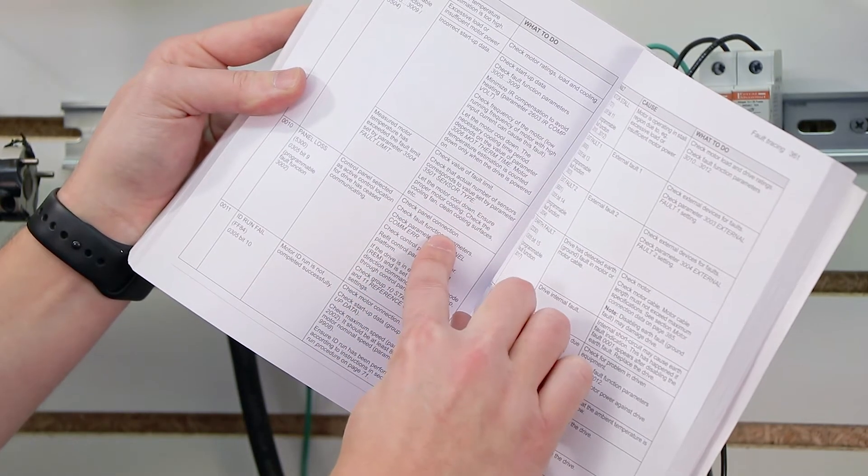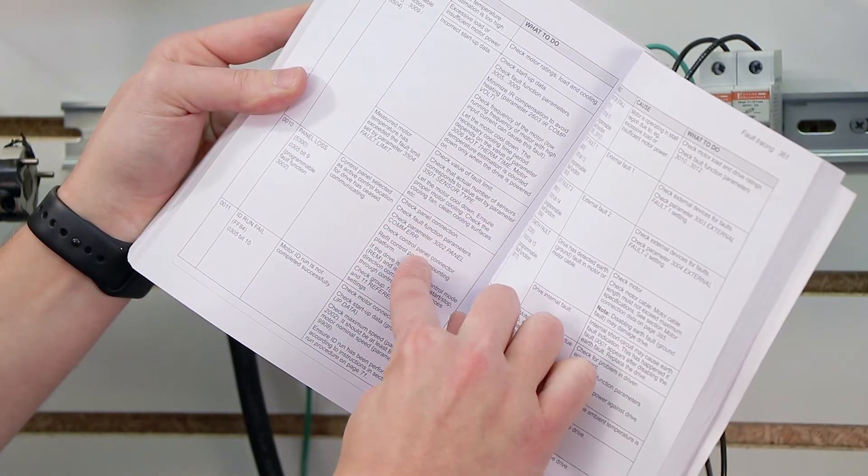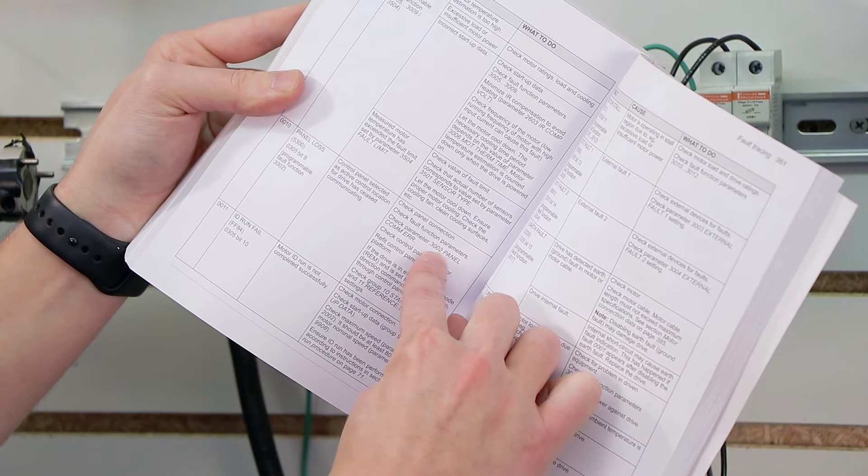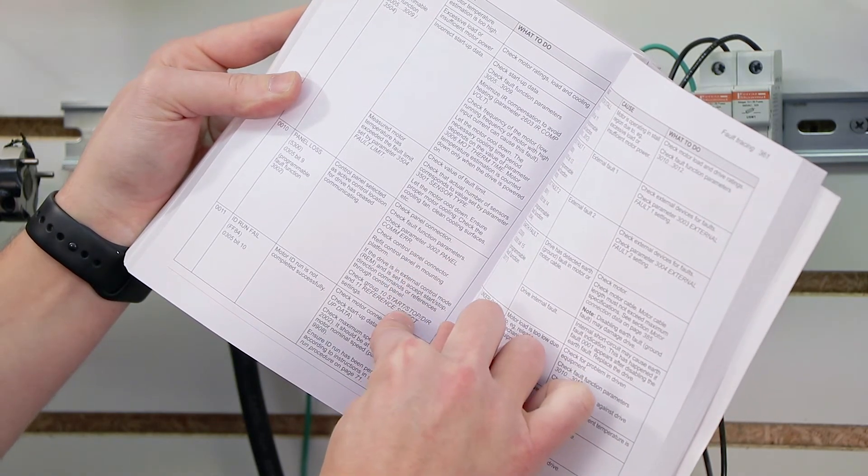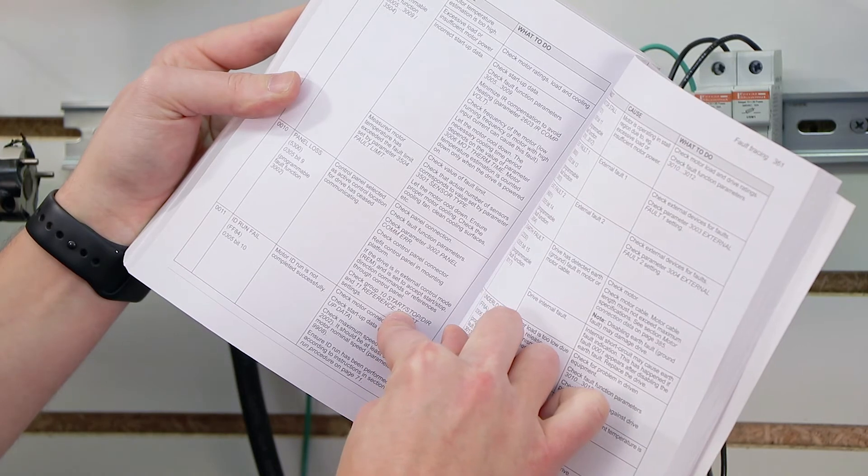We can check the panel connection, check the fault function parameters, check a certain parameter 3002 for the panel comm error. Essentially, they're giving me a whole list of suggestions to make that error message go away.